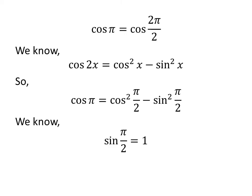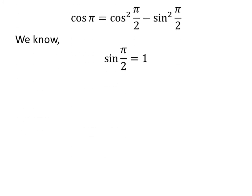We know value of sine of half of pi is equal to 1. We also know the value of cosine of half of pi is equal to 0.